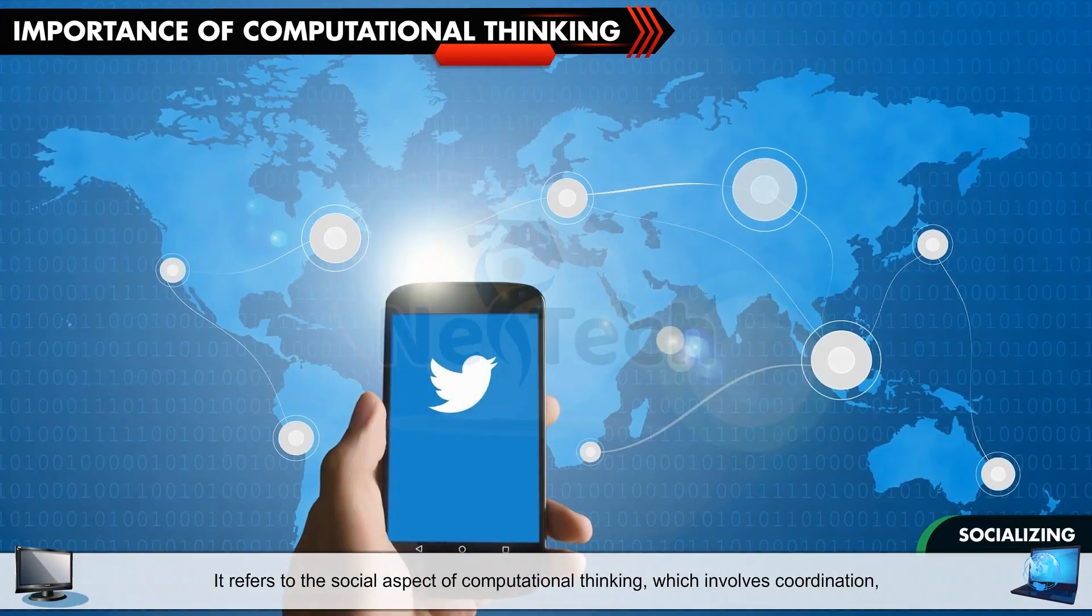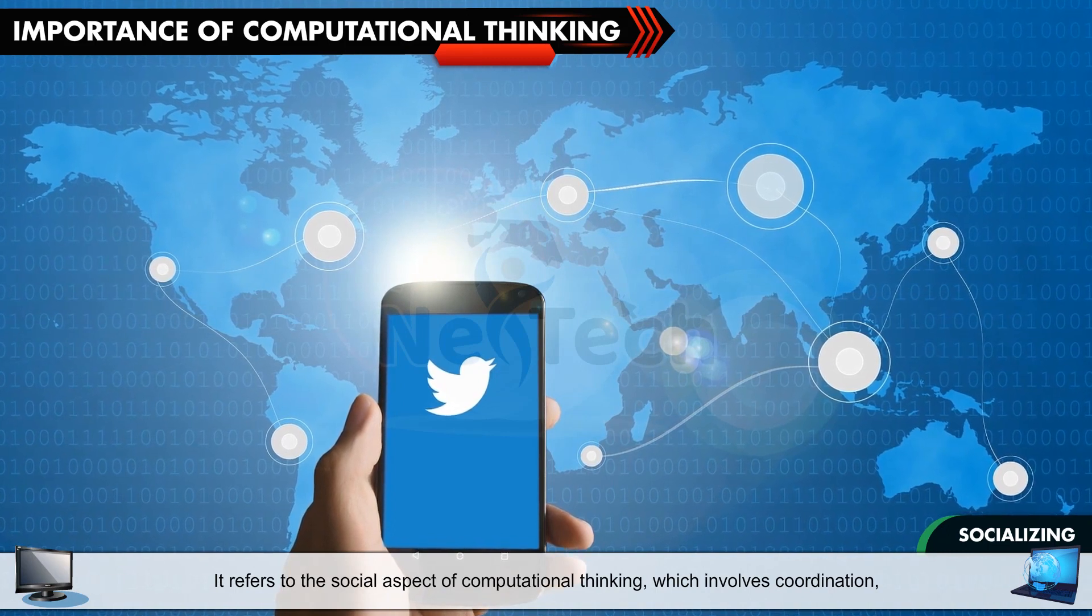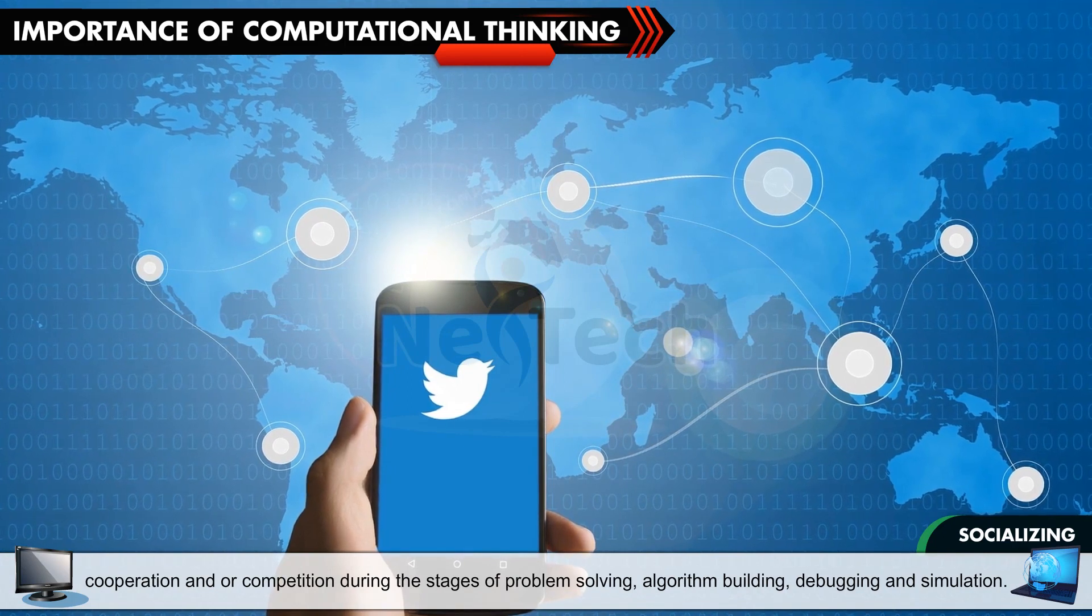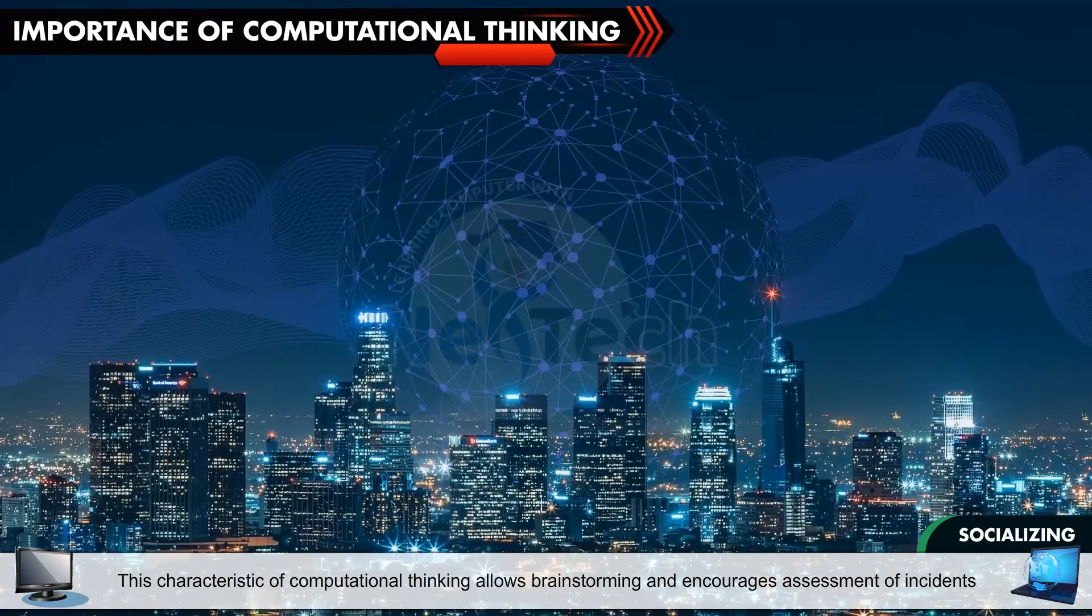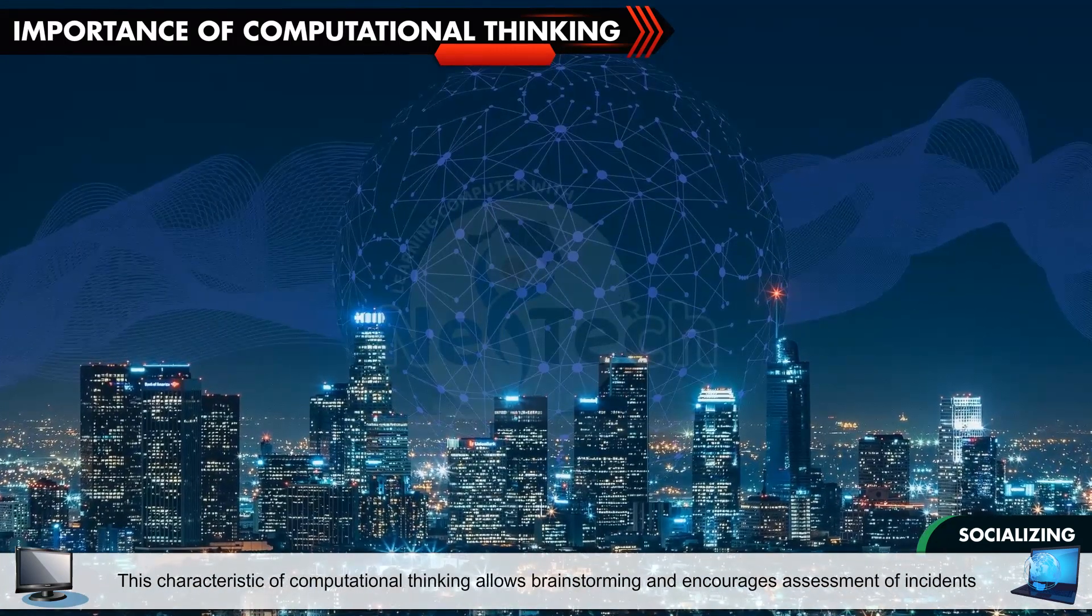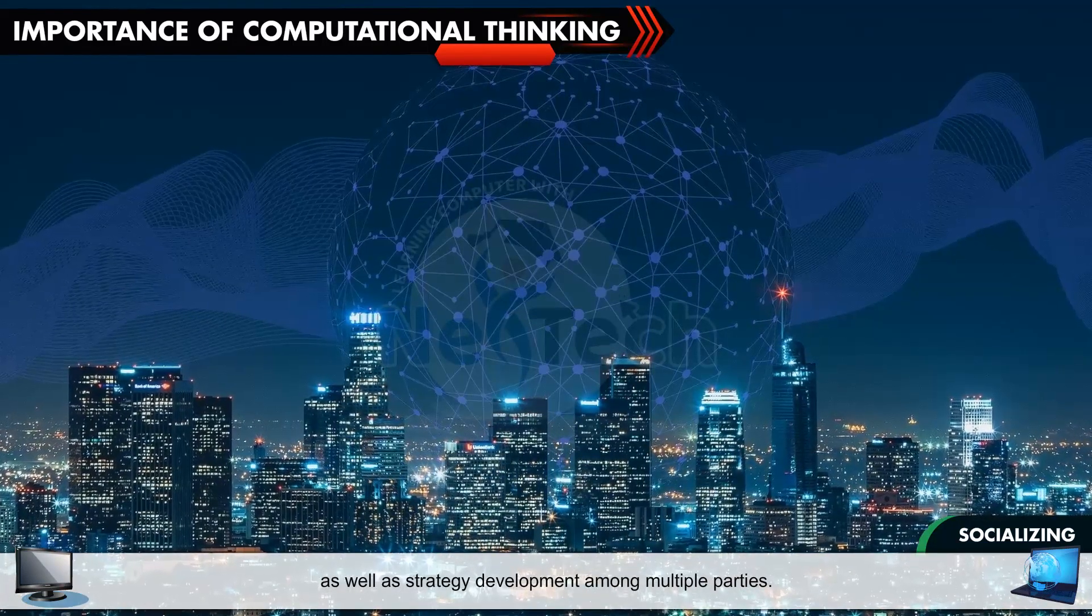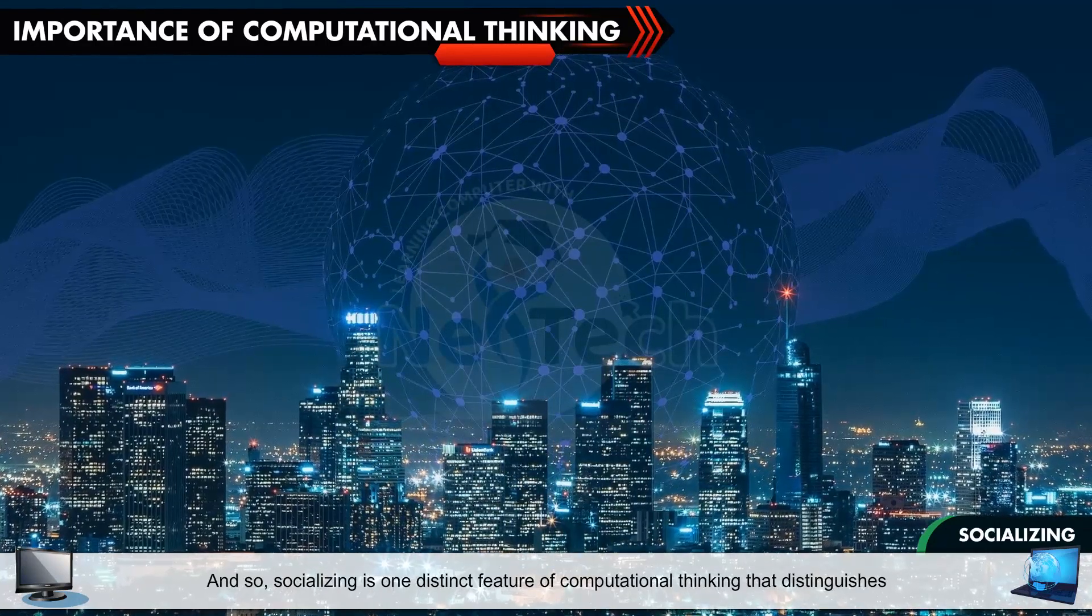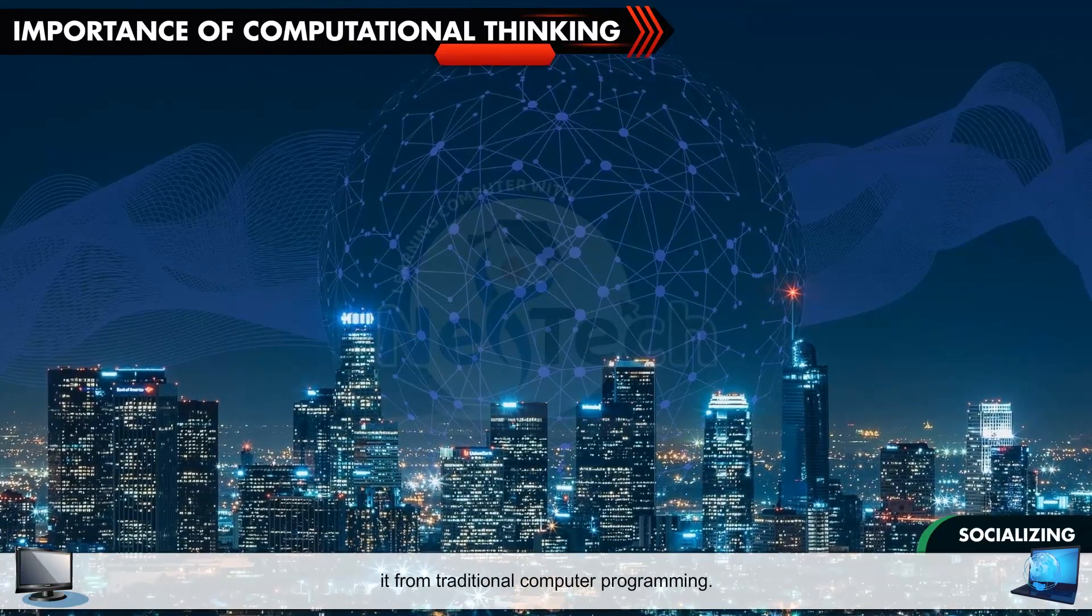Socializing: It refers to the social aspect of computational thinking which involves coordination, cooperation and competition during the stages of problem solving, algorithm building, debugging and simulation. This characteristic of computational thinking allows brainstorming and encourages assessment of incidents as well as strategy development among multiple parties. And so, socializing is one distinct feature of computational thinking that distinguishes it from traditional computer programming.